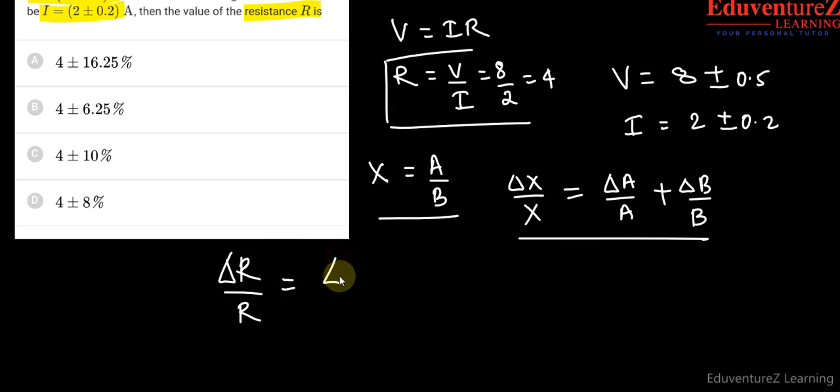...is equal to delta V upon V plus delta I upon I. So what is delta V? This one is delta V, 0.5, 0.5 upon V which is 8, plus delta I, 0.2 upon I which is 2.